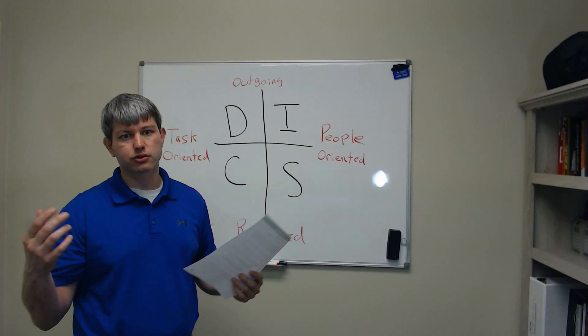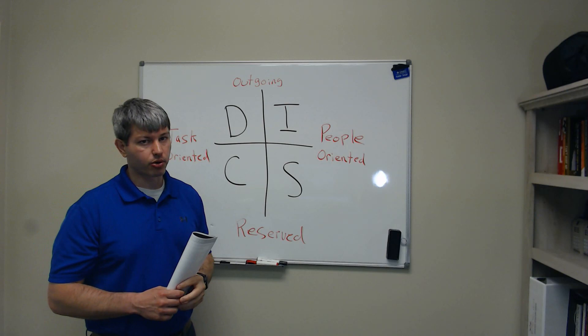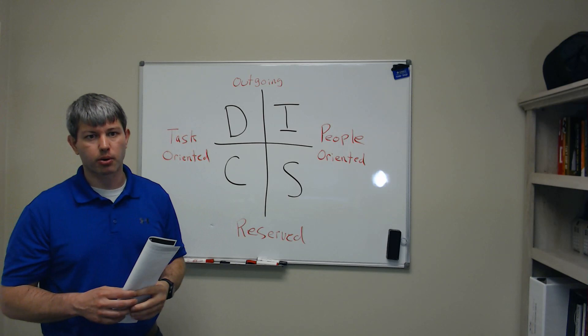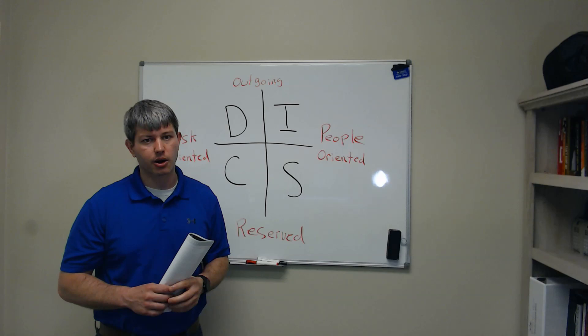A D typically just wants the bullet points. An I wants to chit chat for a long time. An S is going to be more steady. They want to be secure and make sure. A C is going to want to know everything about the whole entire process and look over the numbers 15 times before they make a decision.